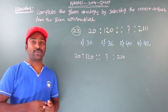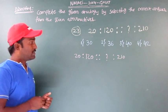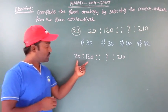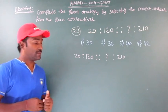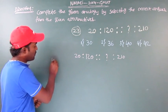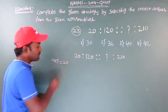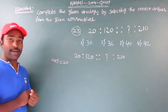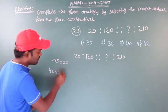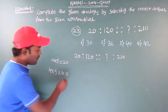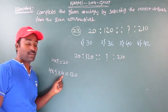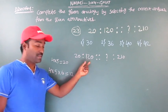In our NMMS video tutorial classes — topic wise video tutorial classes — we explained the different types of analogies used in examinations. The analogy behind these two numbers is: 20 can be written as 4 into 5 equals 20. Now, 4 into 5 into 6 gives 120. So 4 into 5 is 20, and 20 into 6 is 120, and we have 120 here.